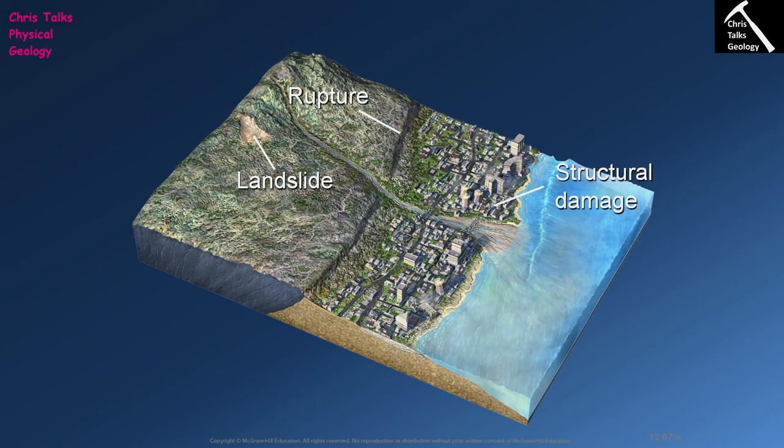The most common type of damage from earthquakes is structural damage, because buildings by their very nature are normally designed to be rigid — they don't really want to move that much, otherwise your building would sway every time the wind blew. You don't want that.